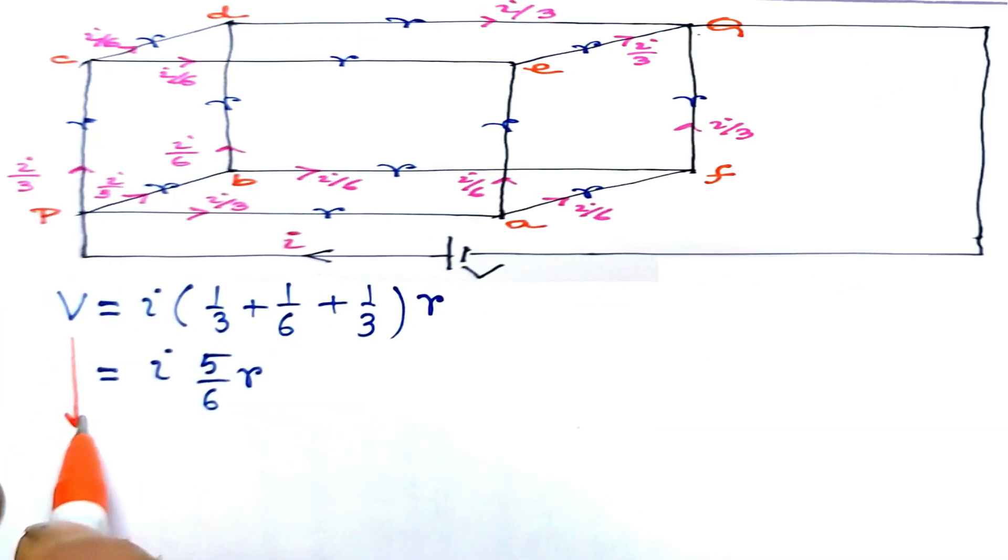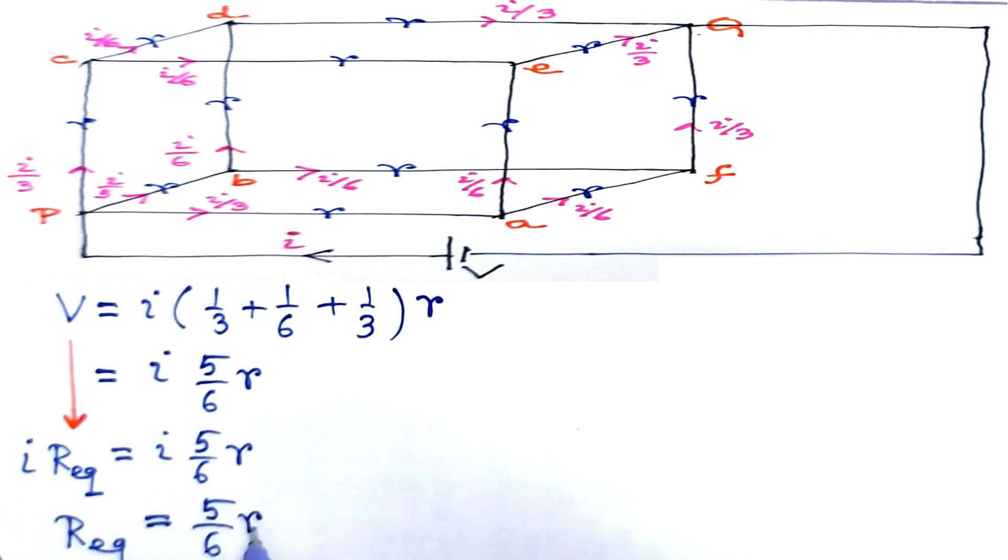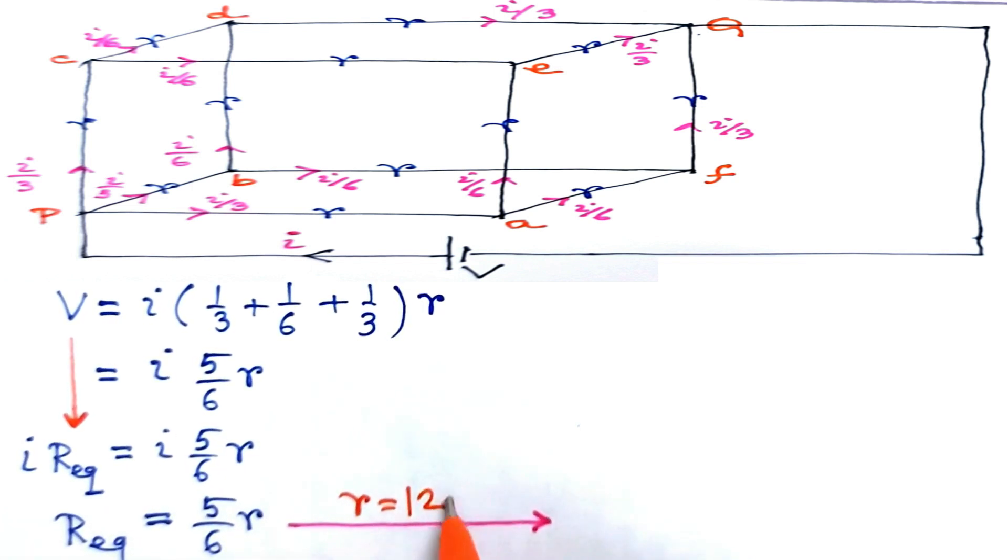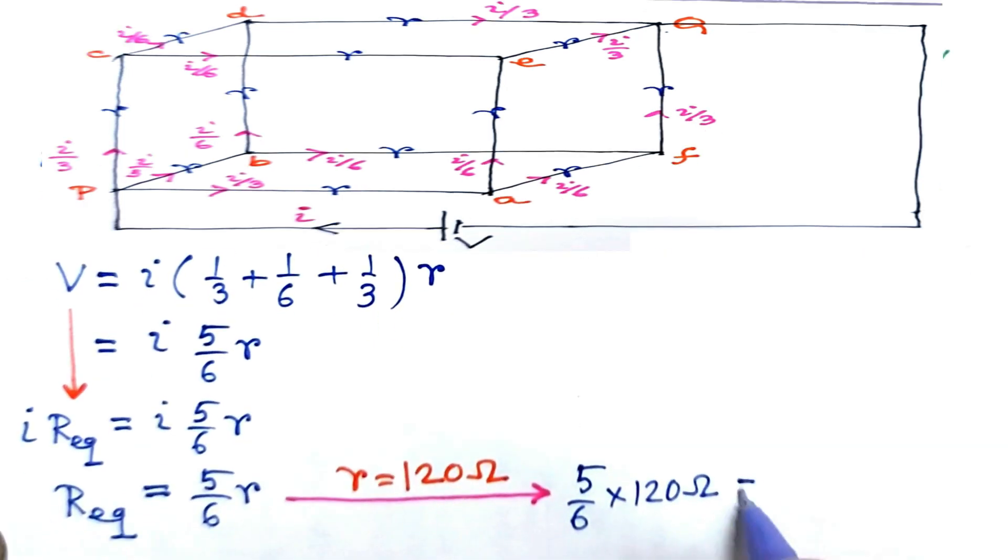Now put v equal to i into equivalent resistance. Hence equivalent resistance R eq is 5 by 6 into r. With r equal to 120 ohm, we have 100 ohm.